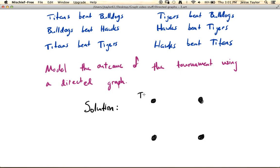Maybe this will be the Titans, and this will be the Tigers, and this will be the Hawks, making this the Bulldogs. Every team plays every other team, so we might put an edge connecting two vertices if those two teams play each other.